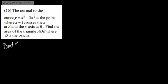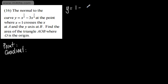What we need to do first is find the normal. For the normal, all we need are two things: a point and a gradient. A normal is a straight line. So let's go ahead and find the point. We've got the x-coordinate of 1, so y is going to be equal to x to the half. 1 to the half is just 1, minus 3 lots of 1 to the quarter, which gives me 1. 1 subtract 3 gives me negative 2. So we've got the point (1, -2).